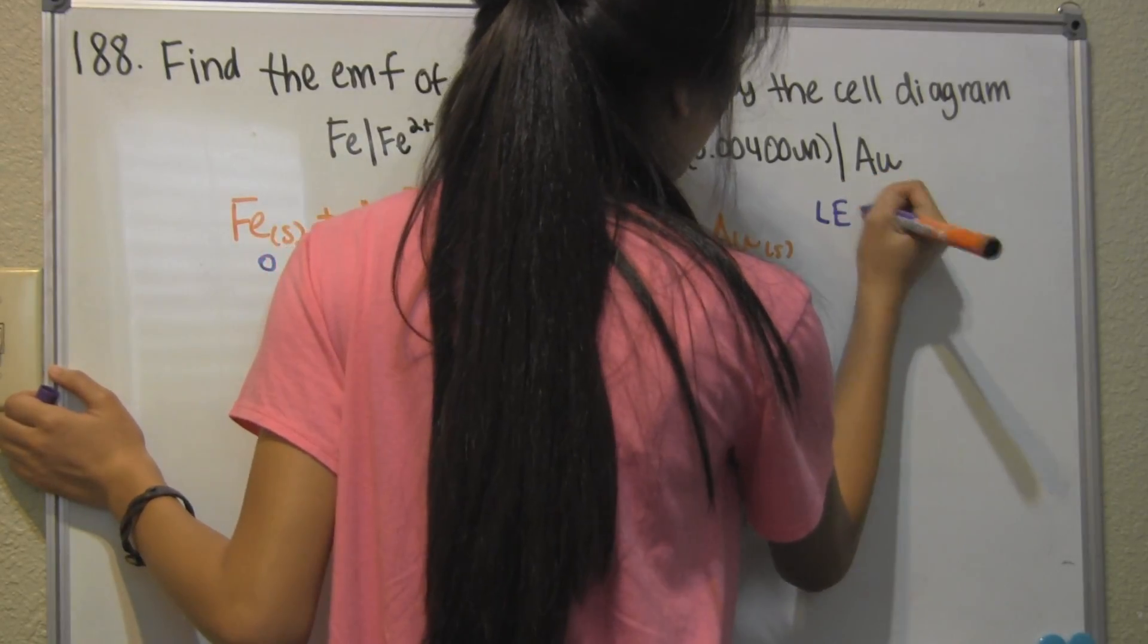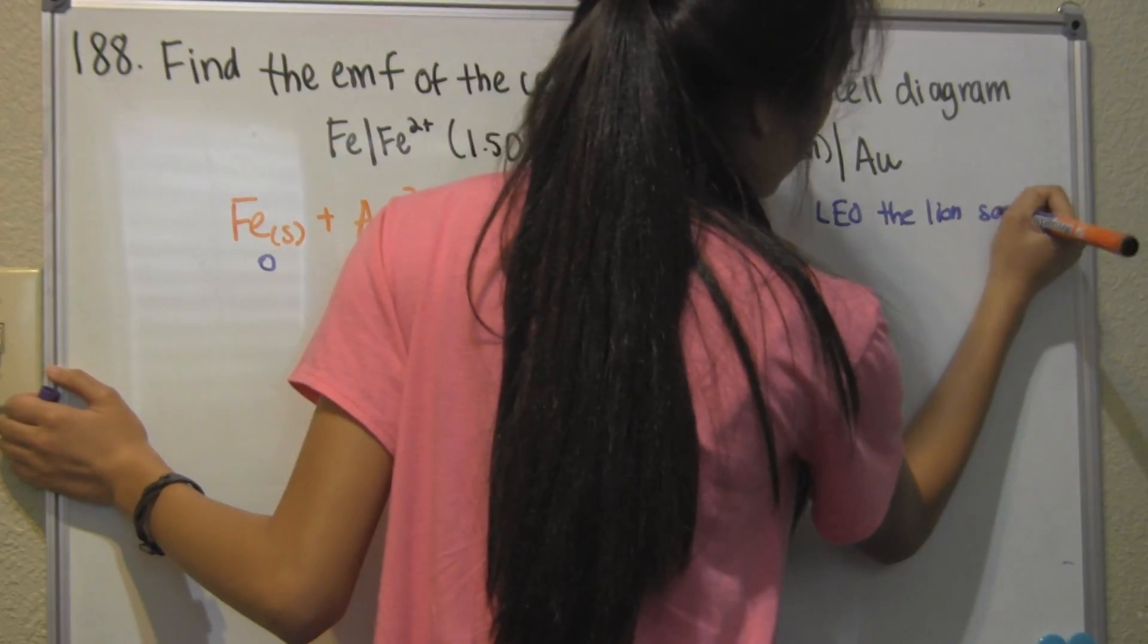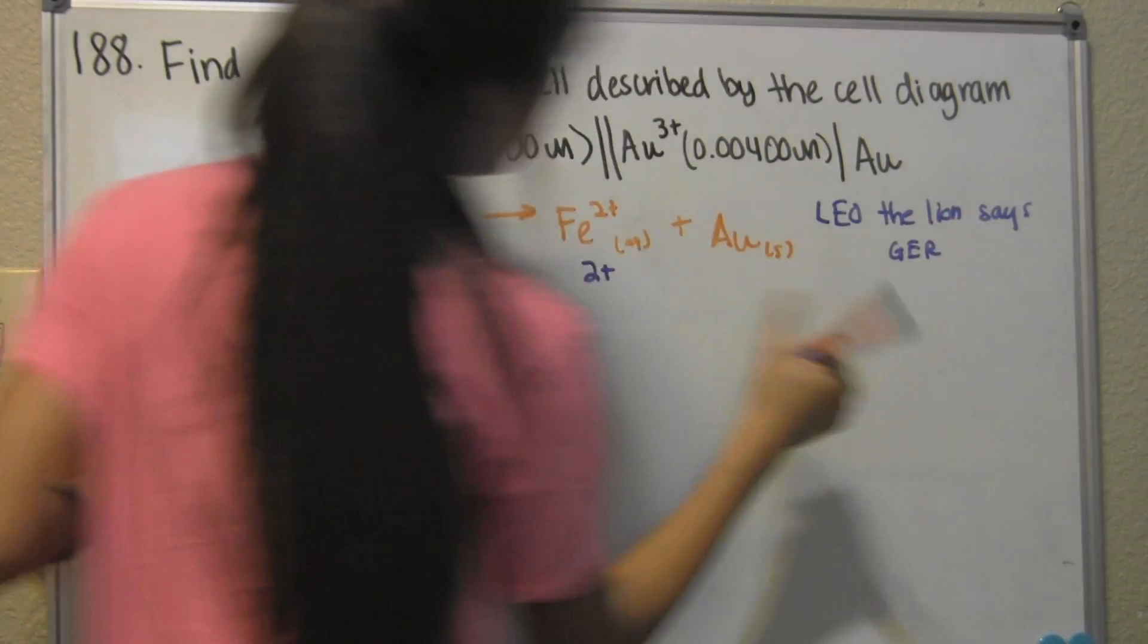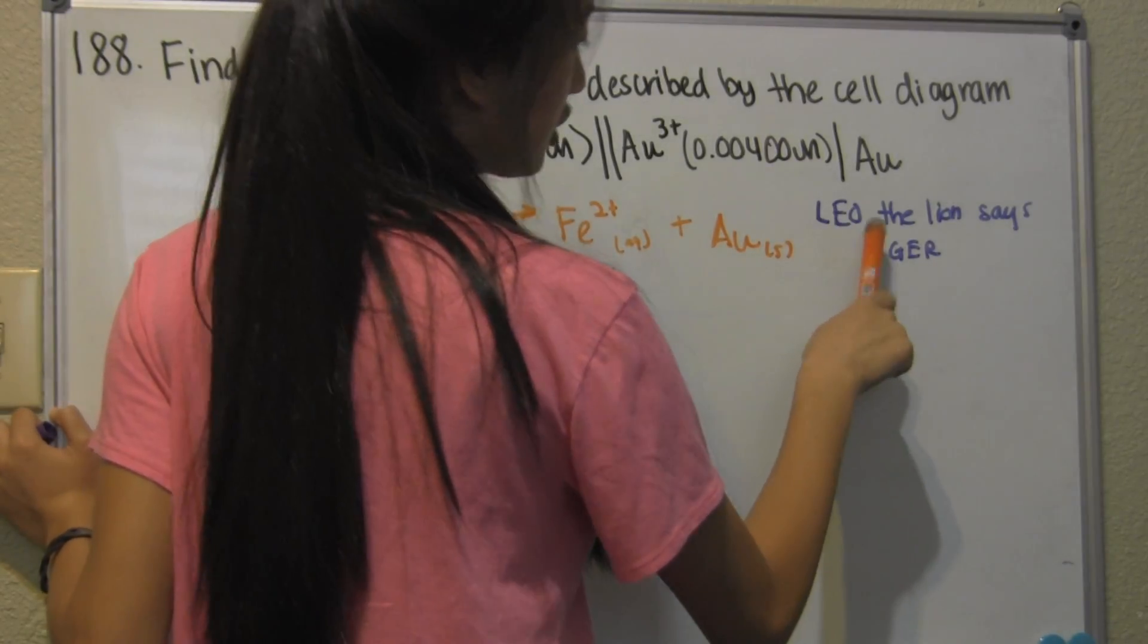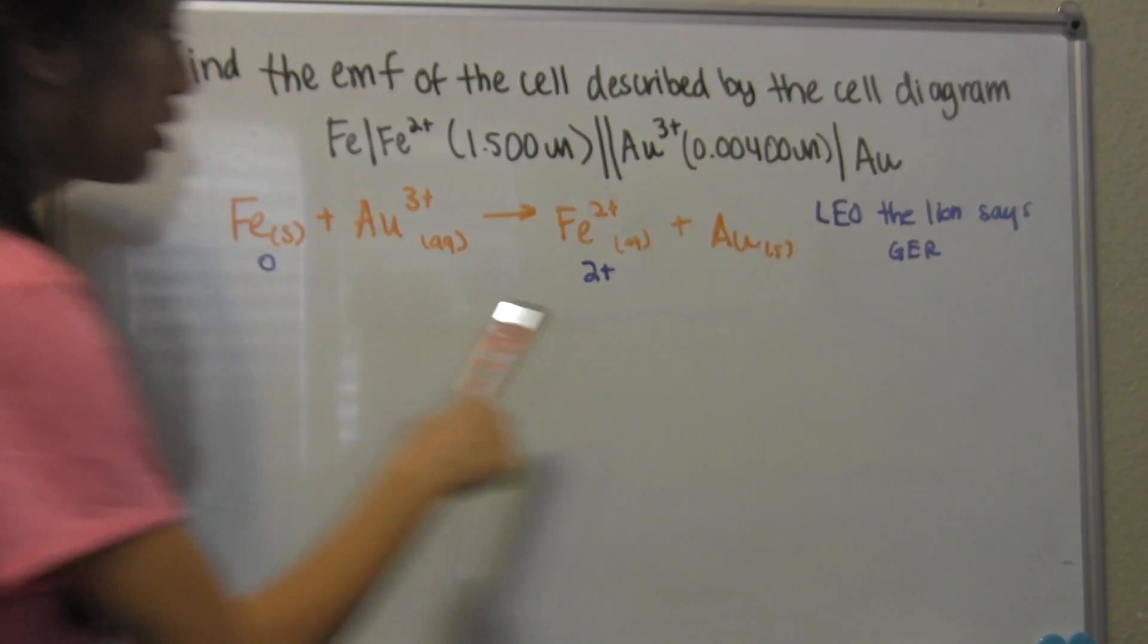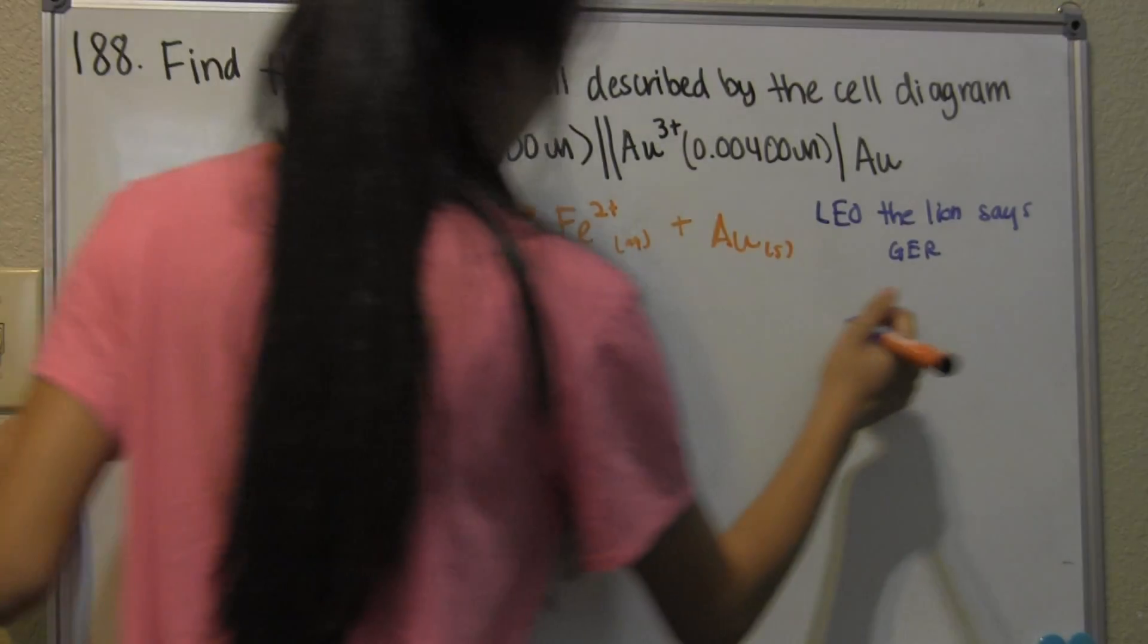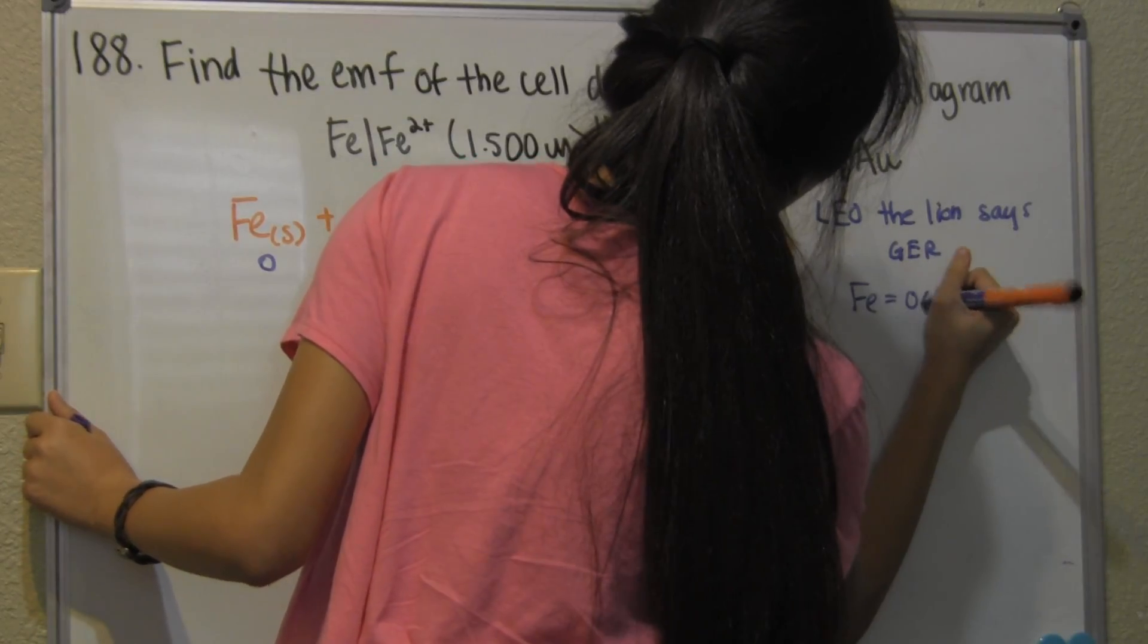If it's losing two electrons, you should always think Leo the lion says GER. Since it's losing electrons, Leo, loss of electrons equals oxidation. So the oxidized one out of these two elements is Fe. Fe equals oxidation.